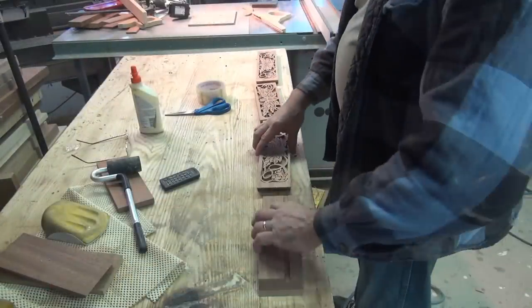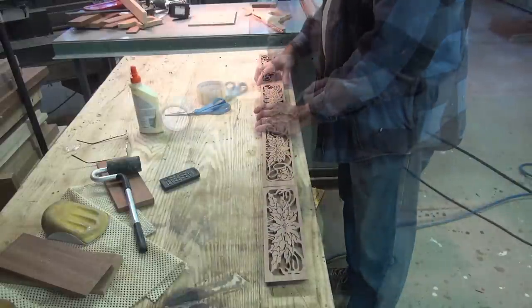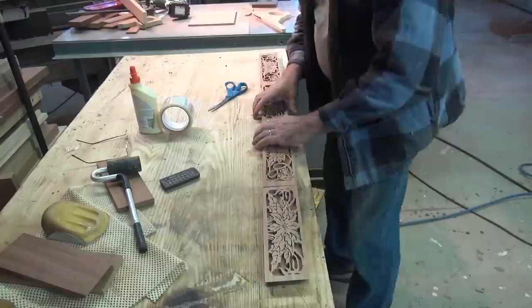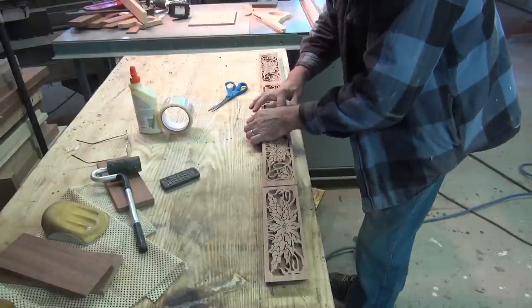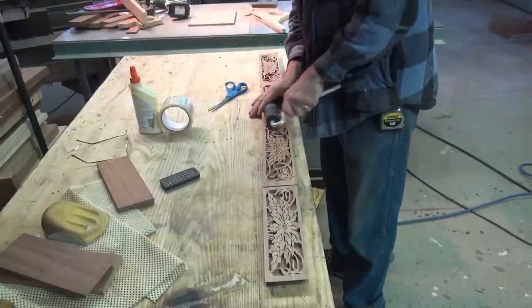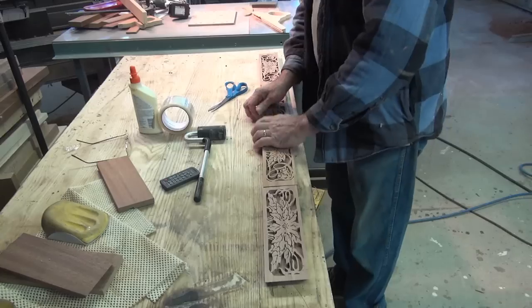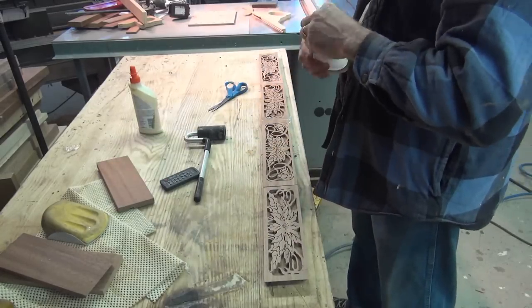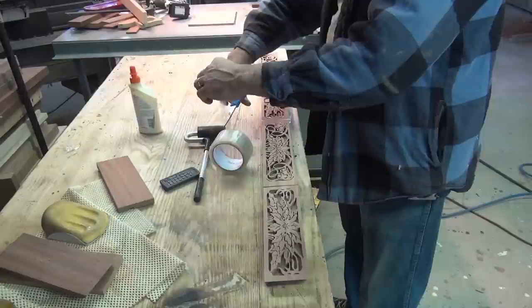Here is a good tip on gluing up miters. Turn your parts over and use a good quality packing tape and tape the parts together tightly. Use a roller to make the tape tight. Spread your glue 100%. Don't rely on the glue to spread itself when you close it up.